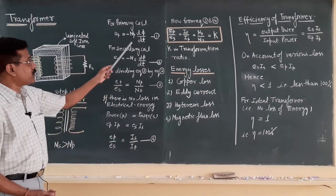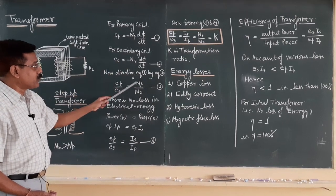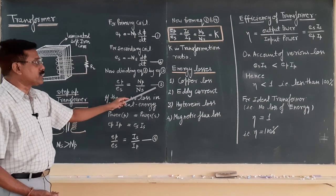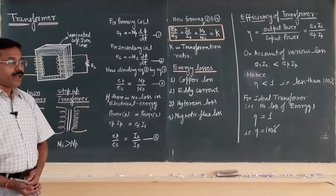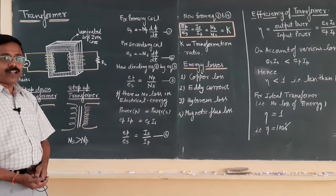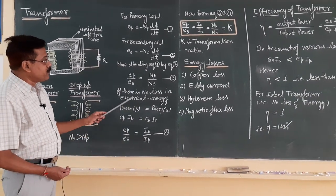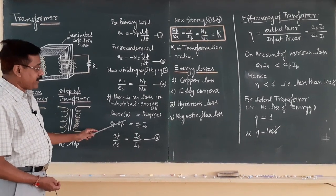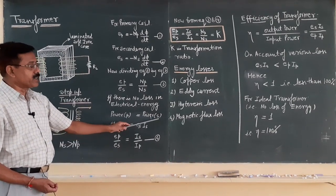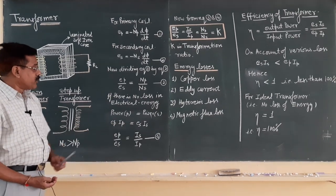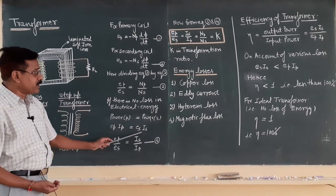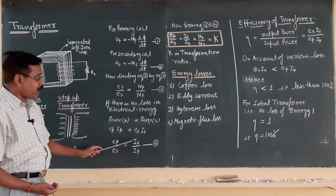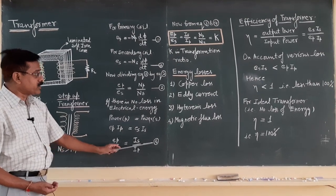If you find the ratio by dividing equation 1 by equation 2, then Ep/Es = Np/Ns — this is equation 3. Since the device transfers electrical energy, and if we assume there is no loss in electrical energy, then the power at the primary terminal should equal the power at the secondary terminal. So we have: Ep × Ip = Es × Is. From this, Ep/Es = Is/Ip — equation 4.